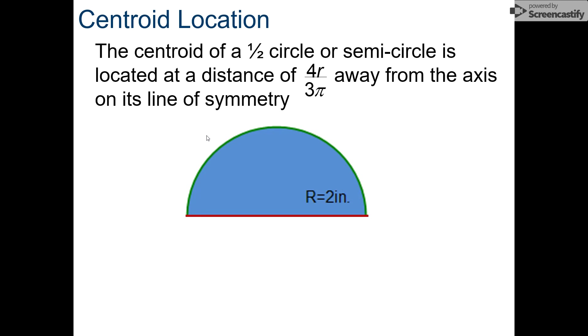For a circle, it's always right in the middle. But we can talk about a half circle. The centroid of a semicircle is located at a distance of 4R divided by 3 pi away from the axis on its line of symmetry. Let's talk about coordinate systems. If I take the bottom left corner of my semicircle, this is my zero zero point.